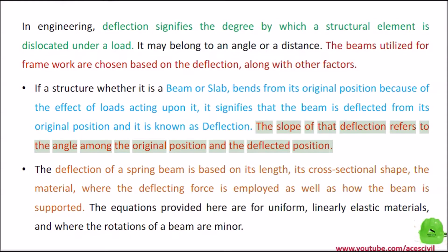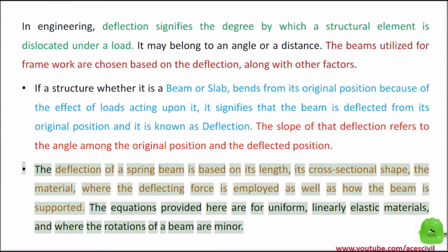The slope of that deflection refers to the angle between the original position and the deflected position. The deflection of a beam is based on its length, its cross-sectional shape, the material, where the deflecting force is applied, as well as how the beam is supported. The equations provided here are for uniform, linearly elastic materials, and where the rotations of a beam are minor.